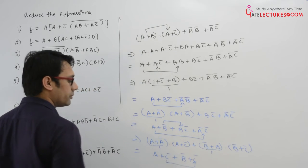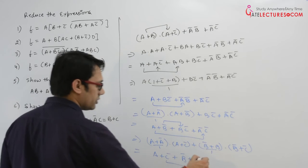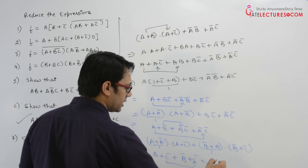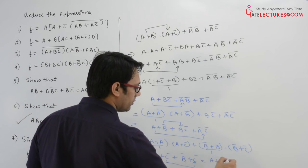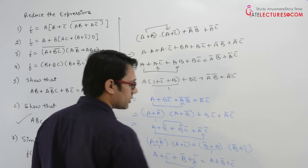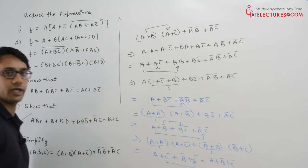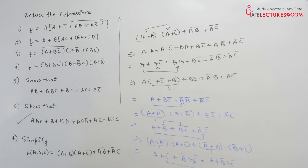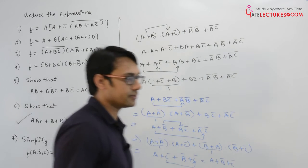c complement and c complement are both the same, so it can be written as a plus b complement plus c complement. It is very simple to understand in this case.